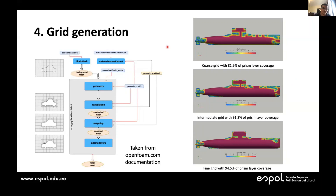We put everything together in the setup files: blockMeshDict, surfaceFeatureExtract, and snappyHexMeshDict. The surfaceFeatureExtract step was especially important for the Type 209 due to the many features where the superstructure intersects with the main hull. We noticed that the finer the grid, the higher the prism layer coverage — this behavior needs to be checked every time we do this kind of refinement.